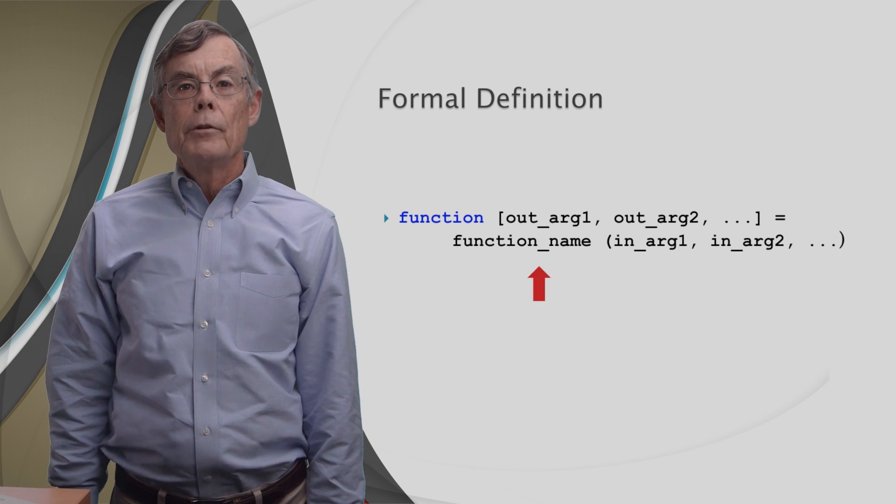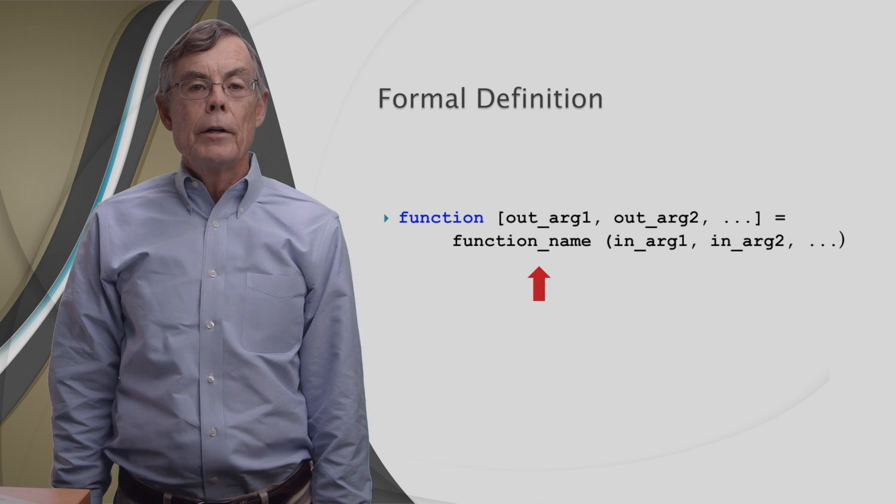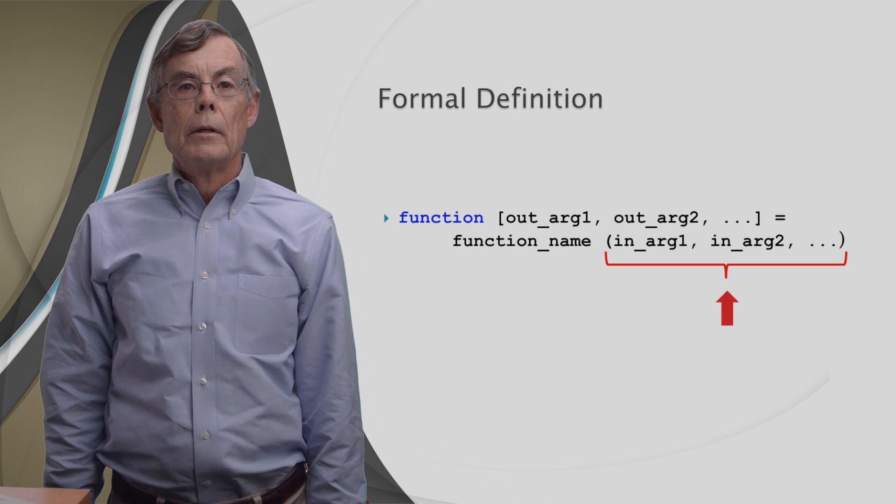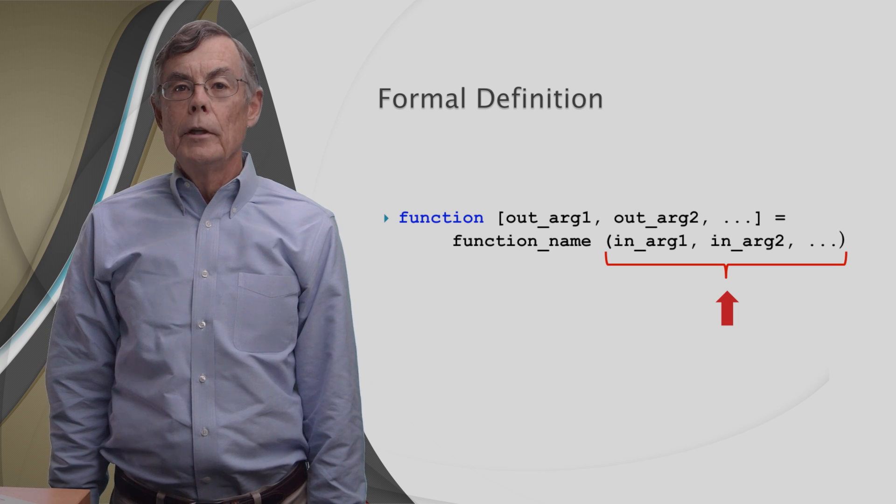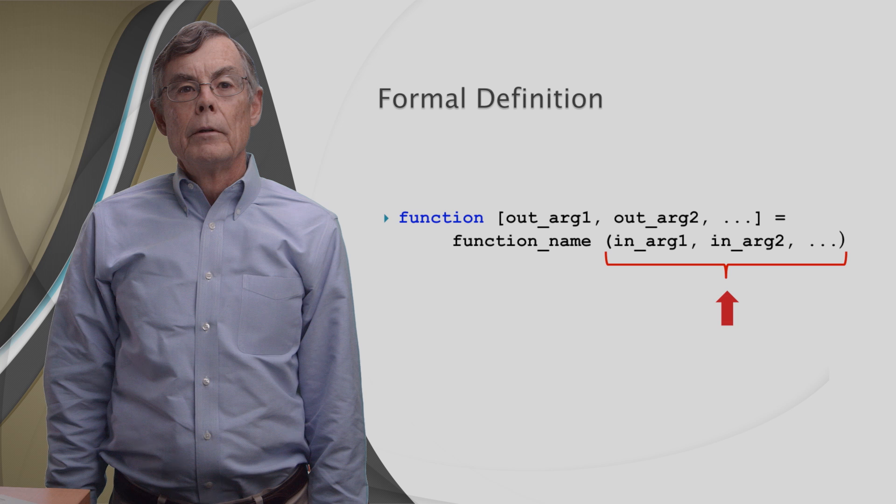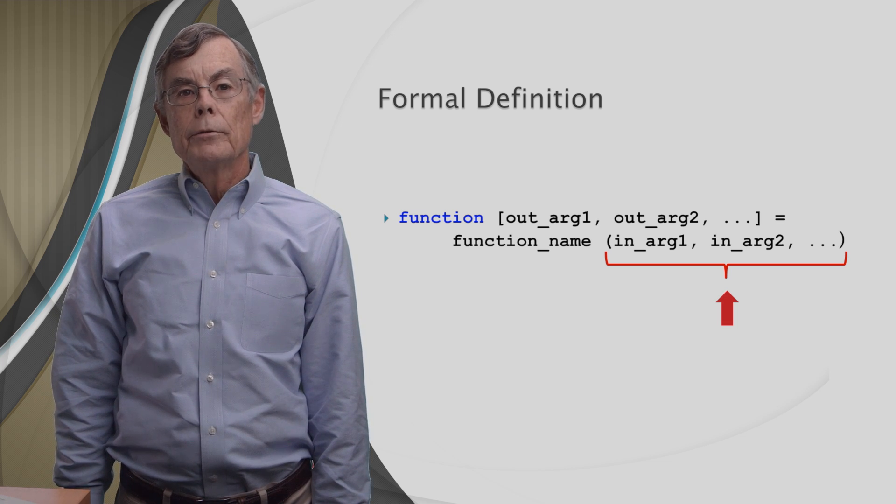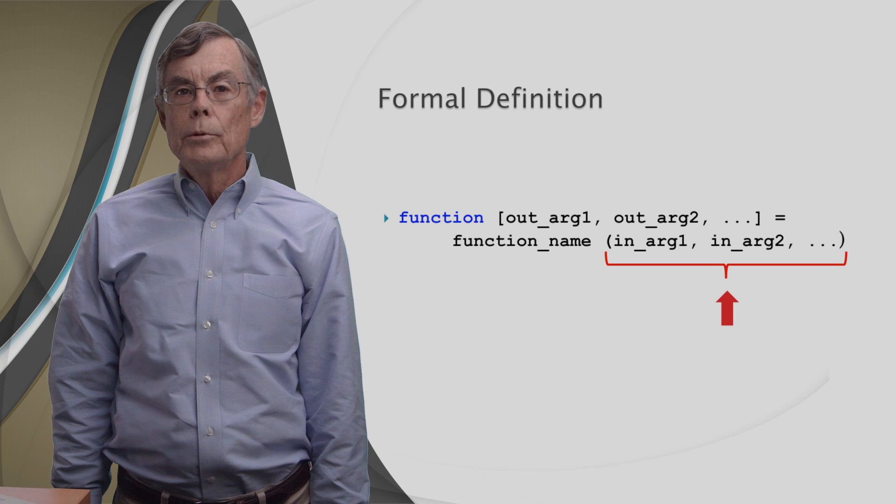Next comes the function name, and the same rules apply for function names as for variable names. Then come the input arguments, if any. If you don't have any input arguments, then parentheses are optional. Otherwise, a comma separated list of input argument names goes between parentheses.